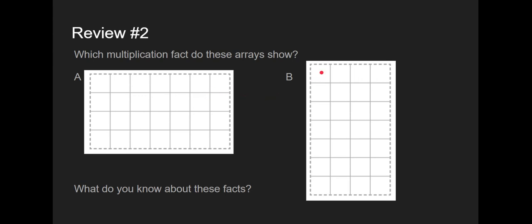Let's go to problem B. Let me count the rows: 1, 2, 3, 4, 5, 6, 7. There are 7 rows and across the bottom is 1, 2, 3, 4. So this one is modeling 7 times 4. This one models 4 times 7. This one modeled 7 times 4. It's almost like A was just turned to become B. So what do we know about these facts? We know that these facts are called turnaround facts. 4 times 7 is the same as 7 times 4.